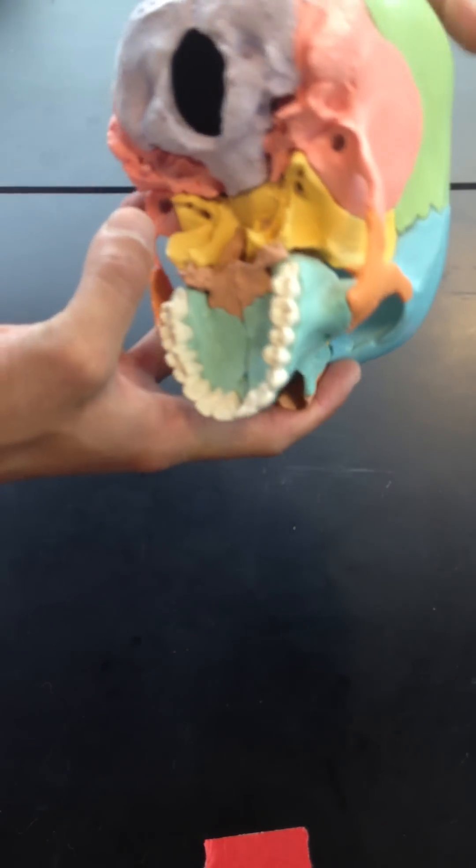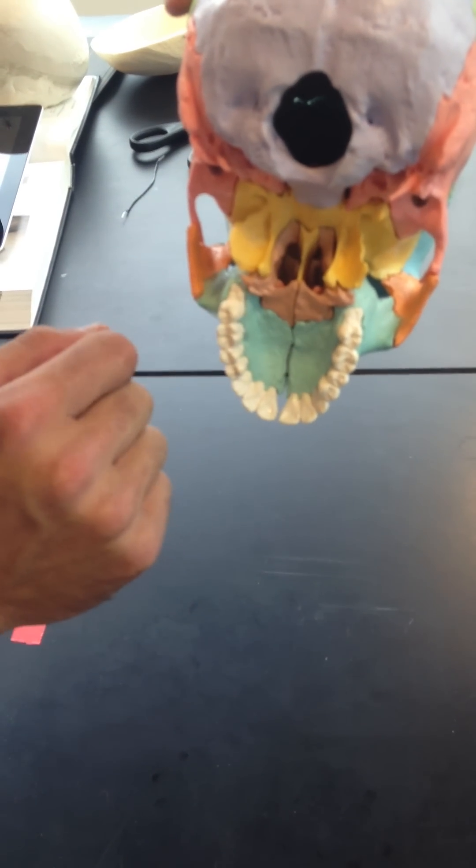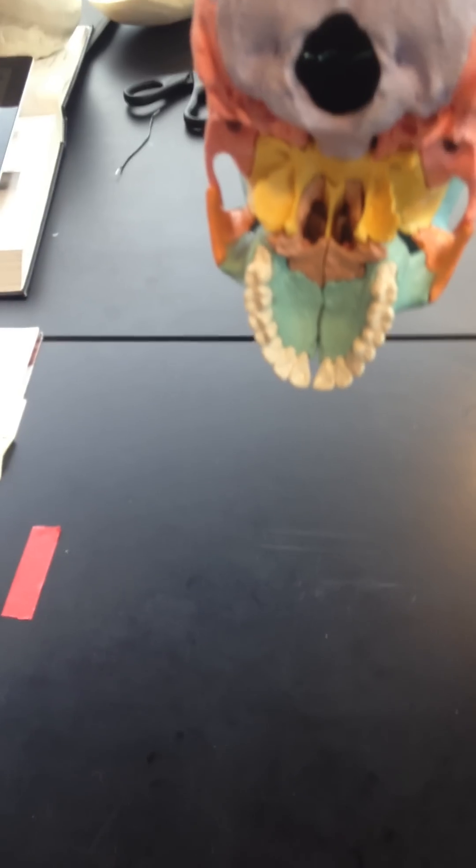If I look at an inferior view, we have the vomer bone in yellow. It meets up with the sphenoid bone, also seen in yellow, but the vomer is in fact a different bone than the sphenoid.